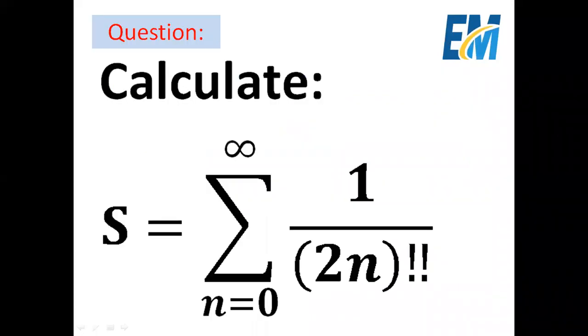Hello everyone. Today we are going to calculate the following infinite sum: s equals 2 times the summation from n equals 0 to infinity of 1 over the double factorial of 2n.